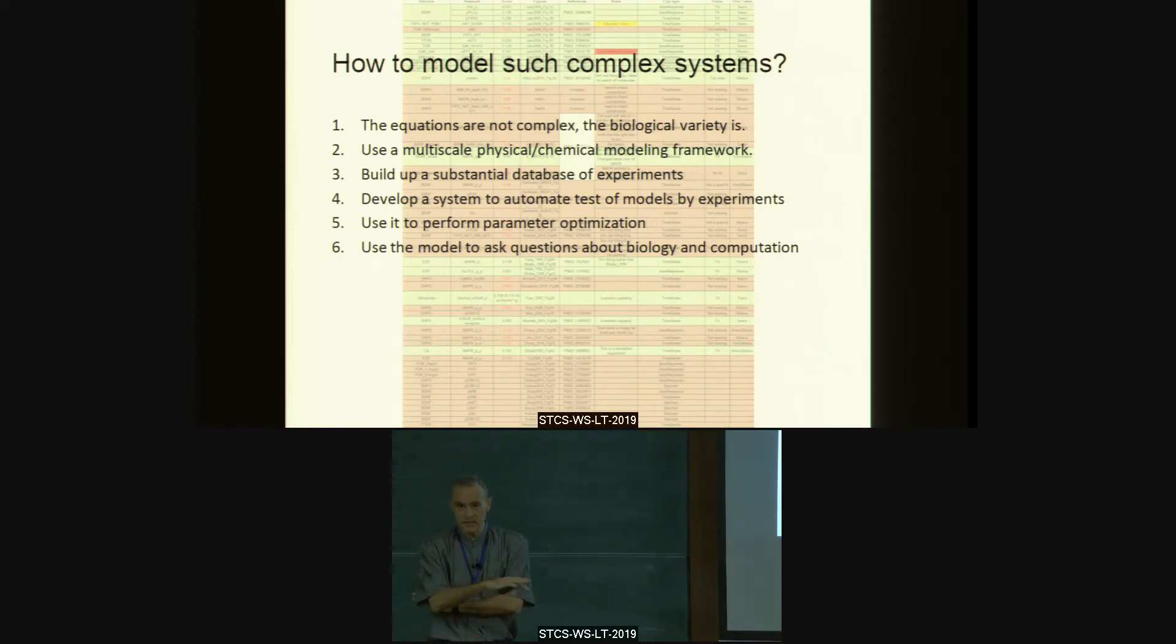First of all, the equations are not complicated. It's just that there's a whole bunch of different distinct molecules with different rates. That's really the basis of it. We use a multiscale physical and chemical modeling framework. It's something we call MOOSE. I won't discuss it. But it models things at the molecular level, at the subcellular level, at the Hodgkin-Huxley, at the electrical level, and at the network level. So that lets us look at the interplay of these events. We build up, we're building up and continue to build up a database of experiments. And what we have is this database is not simply saying, look at that paper, look at that paper. It's a structured database which we can use to drive the simulator. We can say, look at this experiment in the database and run that experiment.